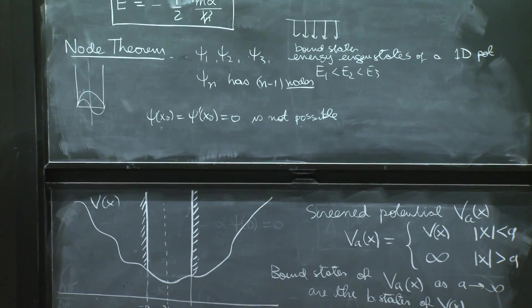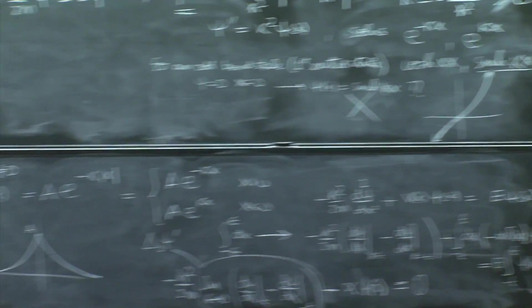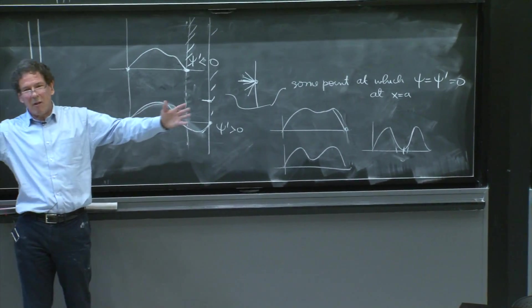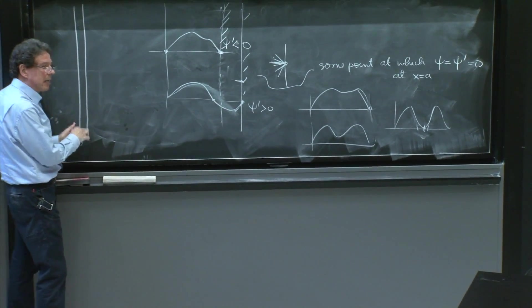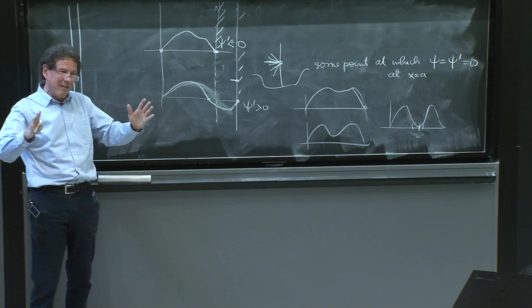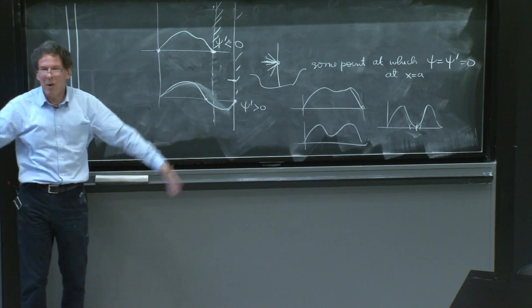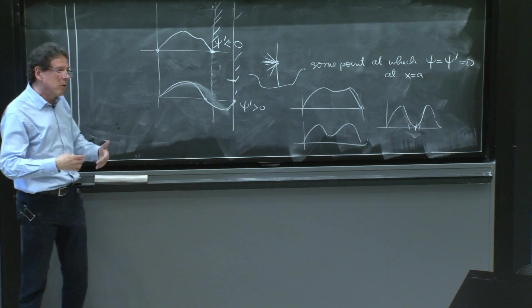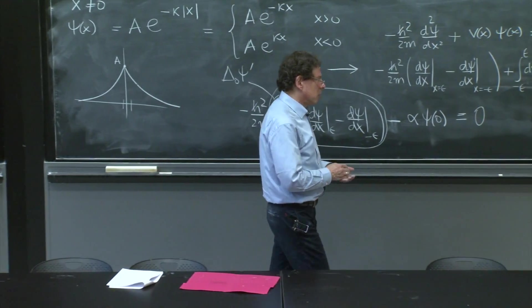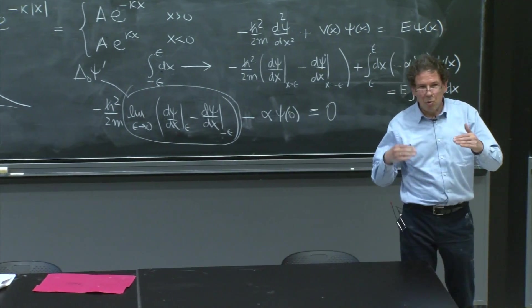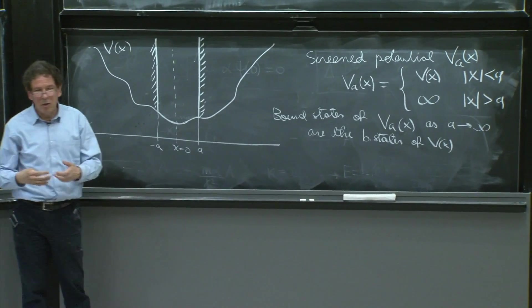So if you start with whatever wave function that has no nodes, as you increase the screen, you just can't produce a node. So the ground state of the whole big potential will have no nodes. And if you start with the first excited state that has one node, as you increase the screen, you still keep one node. So the next state of the full potential will have one node as well. And that way, you argue that all your bound states of the complete potential will just have the right number of nodes, which is 0, 1, 2, 3, 4. And it all came, essentially, from the infinite square well and continuity.